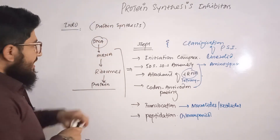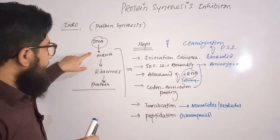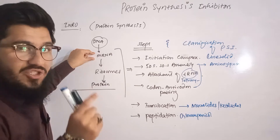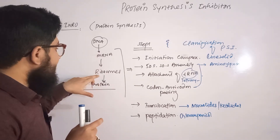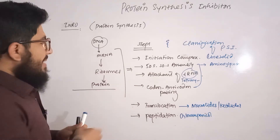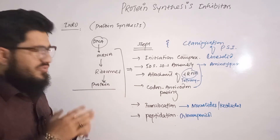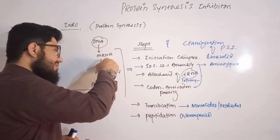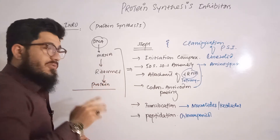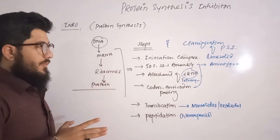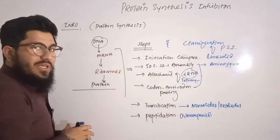From the DNA, messenger RNA will be synthesized by means of transcription. This messenger RNA carries a message that is forwarded to the ribosomes, and the ribosome then translates that message by means of translation. So the protein synthesis takes place: DNA synthesizes messenger RNA, the messenger RNA comes to the ribosomes, and proteins are synthesized.